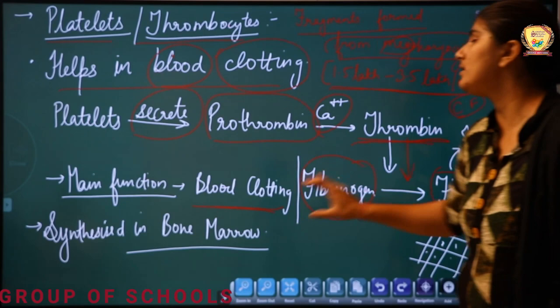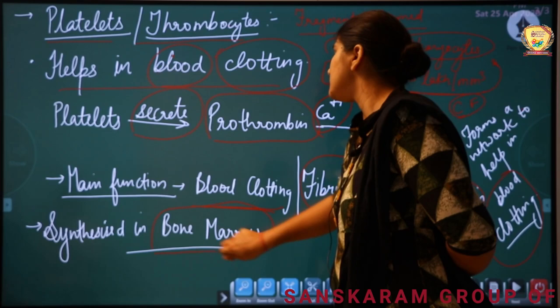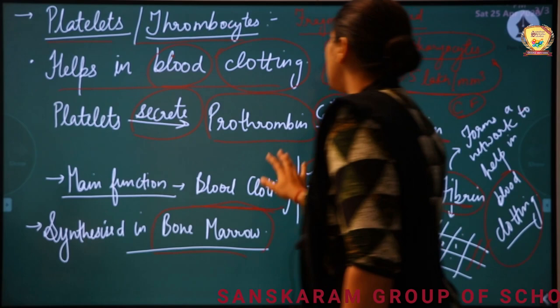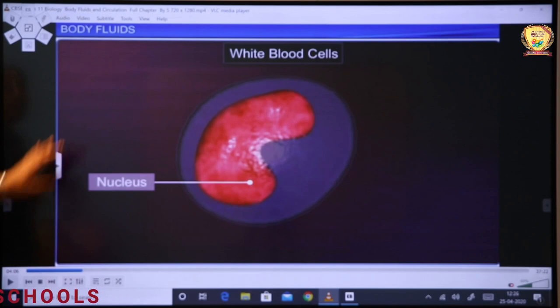So the main function of platelets is blood clotting, and platelets, just like RBCs, are synthesized in the bone marrow. Now we will do a revision through a video — just like we do in our previous lectures. Watch it carefully — it will help you understand better.